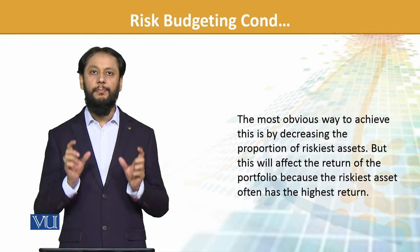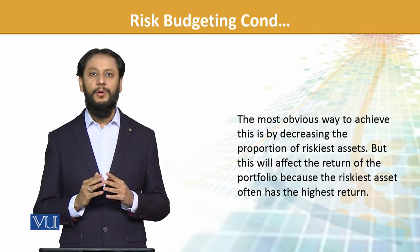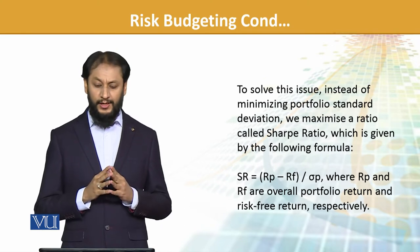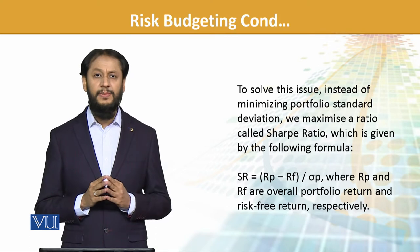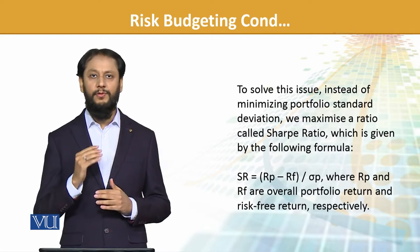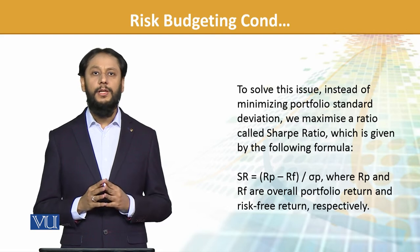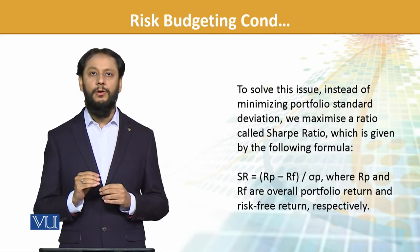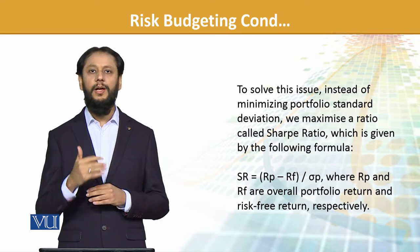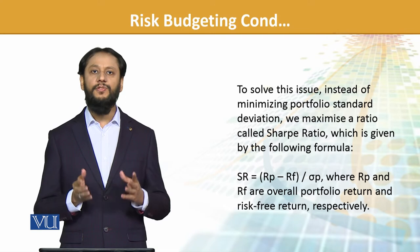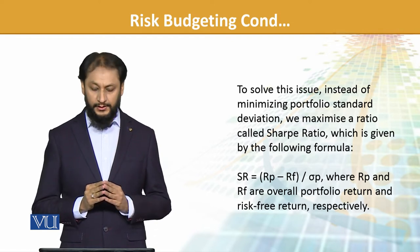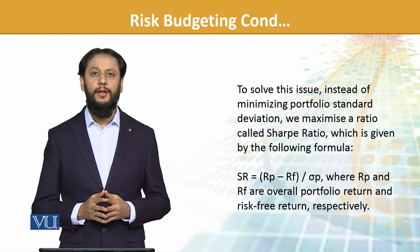To solve this issue, instead of minimizing portfolio standard deviation, we maximize a ratio called the Sharpe ratio. We try to go to the model or structure where the Sharpe ratio is maximized — the highest Sharpe ratio will be considered the best from the possible options. The Sharpe ratio is the return of the portfolio minus the risk-free rate, divided by the standard deviation of the portfolio.